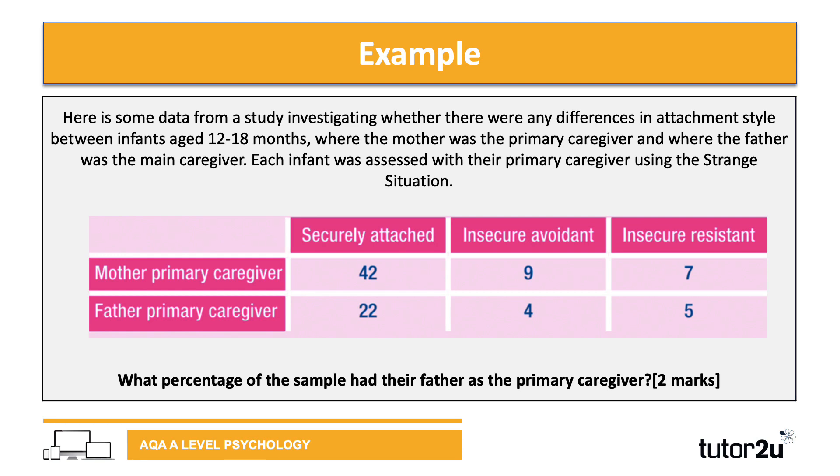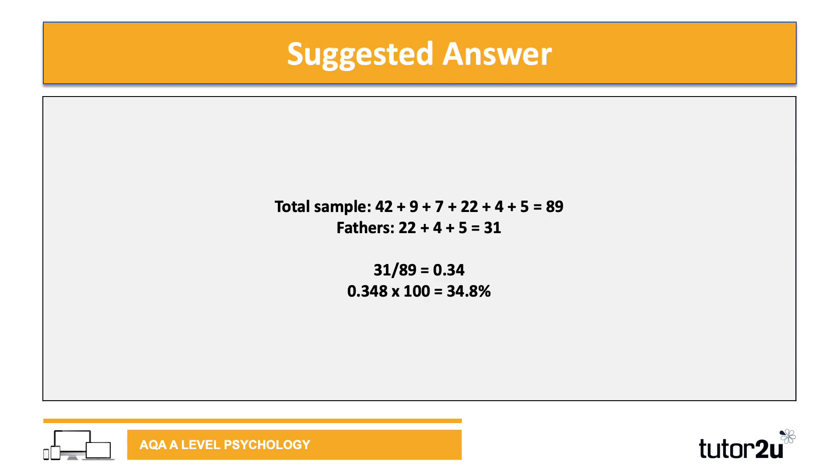What percentage of the sample had their fathers as the primary caregiver? For primary caregiver as father, we've got 22, 4, and 5. We also need the total sample: 42, 9, 7, 22, 4, and 5, which equals 89. The total for fathers is 31. So 31 divided by 89 equals 0.34. To make that a percentage, multiply by 100, giving 34.8%. If you didn't get that, there are lots of resources on tutor2u and online to brush up on these skills.